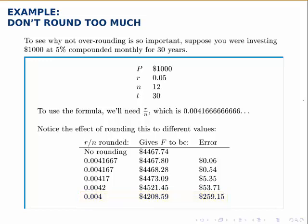So the lesson of this example is to round as little as possible. If you have to retype in the number, type in lots of decimal places to keep the error small. But if possible, do what we've done in the earlier examples and use the answer function in your calculator, or store the answer in the memory to avoid having to retype it in.